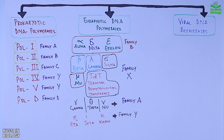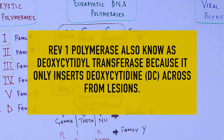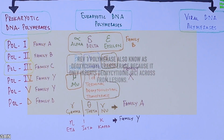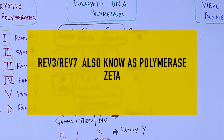We also have some organism-specific DNA polymerases like the REV family. These proteins act as DNA polymerases in some eukaryotes. We have REV1, also known as deoxycytidyl transferase, which belongs to the Y family of DNA polymerases. And we also have the REV3/REV7 complex referred to as polymerase Zeta, from the B family of DNA polymerases.